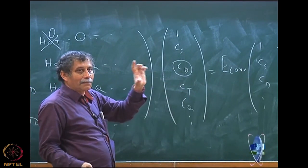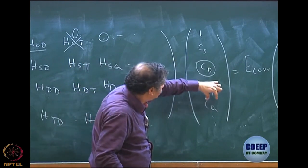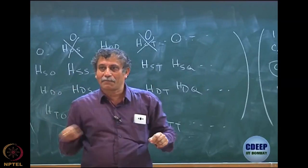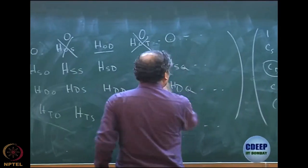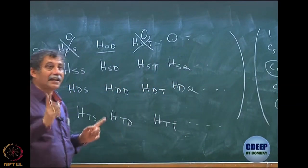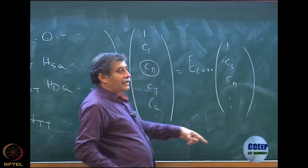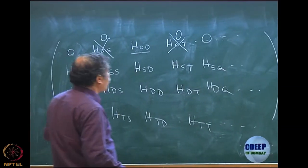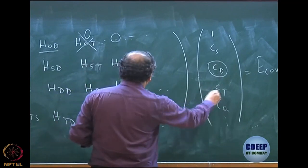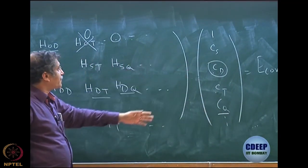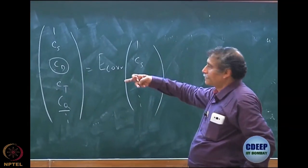The correlation energy always depends only on Cd — that is the only term that directly affects it. However, when we write equations for Cs, Cd, Ct at the next level, the doubles equation becomes HdO times 1 plus Hds times Cs, plus HdD times Cd, plus Hdt times Ct, plus Hdq times Cq and so on. All of these affect the doubles amplitude. Only terms that are zero by Slater rule are excluded.